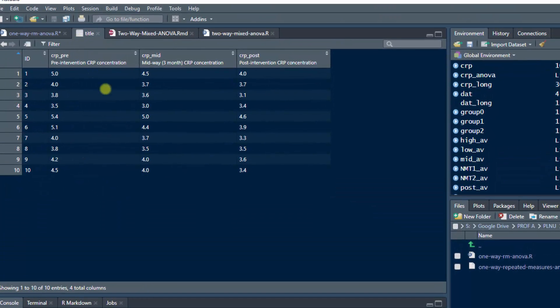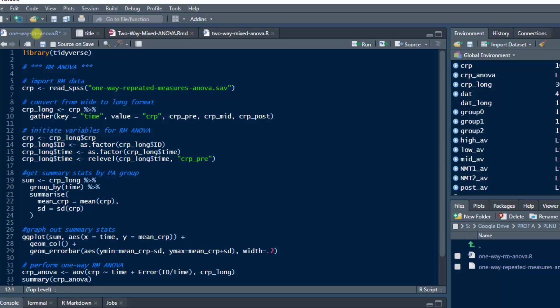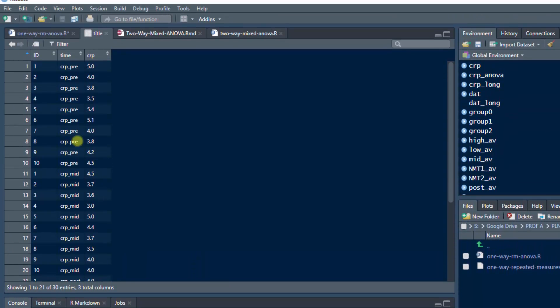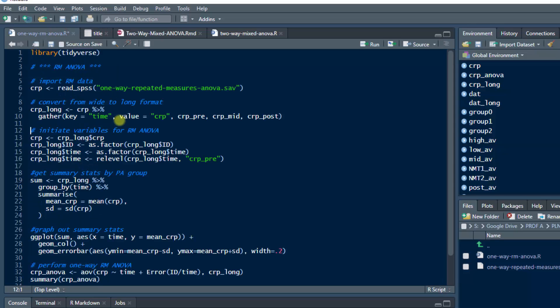I'm going to go ahead and convert it to long format just to show you. Let's view CRP. Notice that the repeated measures is formatted with columns for each time point. So in this case, CRP pre, mid, and post. In RStudio, the way the ANOVAs work prefers to have the format in long form. So I have some code here that converts it from wide to long format.